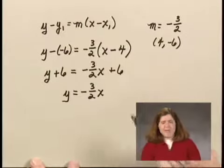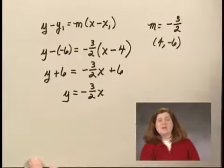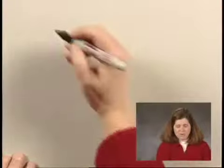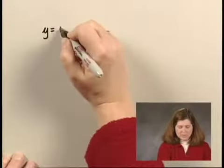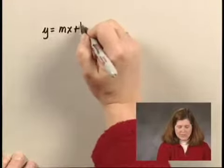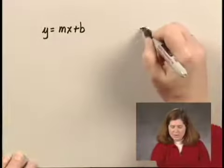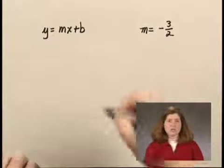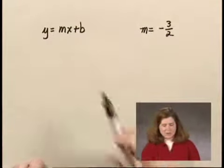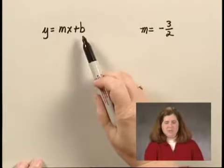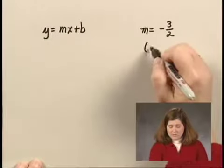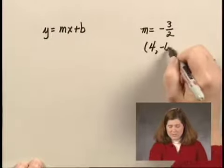Now let's do this again using the slope-intercept form to find the equation of the line. The slope-intercept form is y equals mx plus b. We know the slope from calculating it. We don't know what b is or what the y-intercept is, but we do know a couple of points on the line. In particular, we know the point (4, -6).